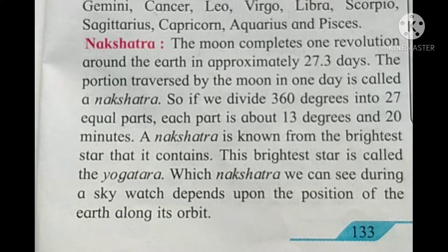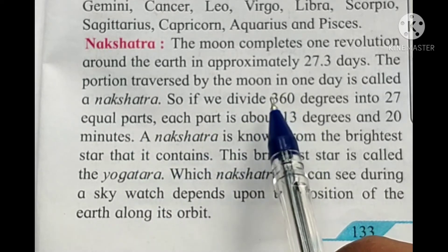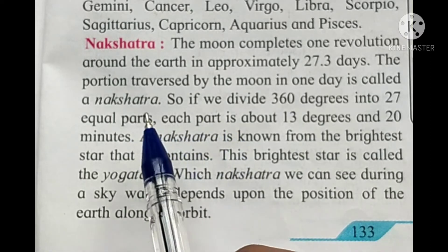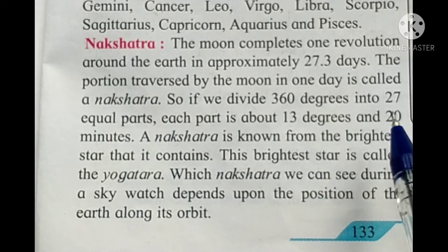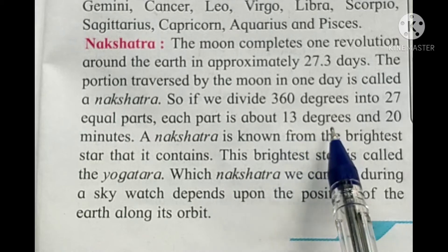Which nakshatra we see during sky watching depends upon the position of the earth along its orbit. In India, we work with 27 nakshatras, where each nakshatra spans about 13 degrees and 20 minutes.